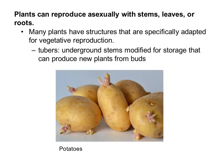Another example are tubers — underground stems modified for storage, like potatoes. They can produce new plants from buds. Each budded area can be cut off and planted and it will grow into a new plant. So on this potato, there might be at least two areas that could each grow into individual plants.